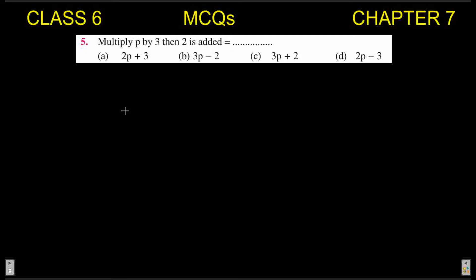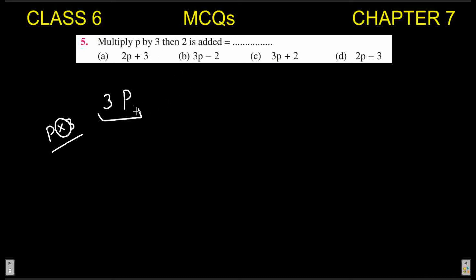Next MCQ: 'multiply p by three, then two is added.' Multiply p by three: p multiplied by 3 is written as 3p (we generally don't write the multiplication sign with variables). Then two is added to 3p, giving 3p + 2. So 3p + 2 is your expression.